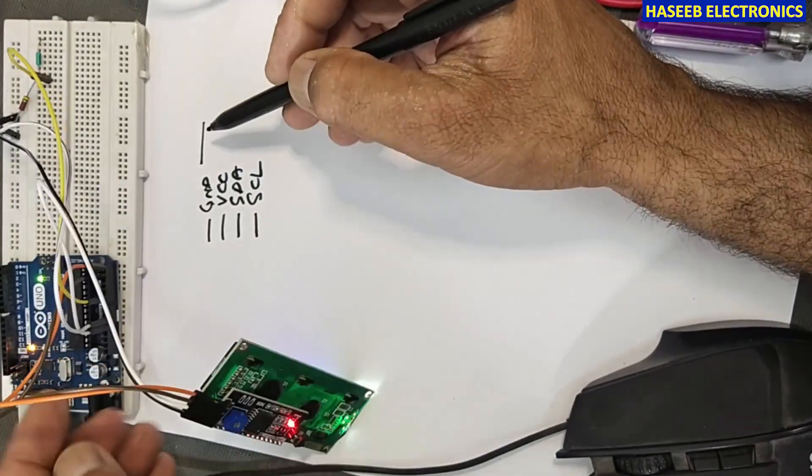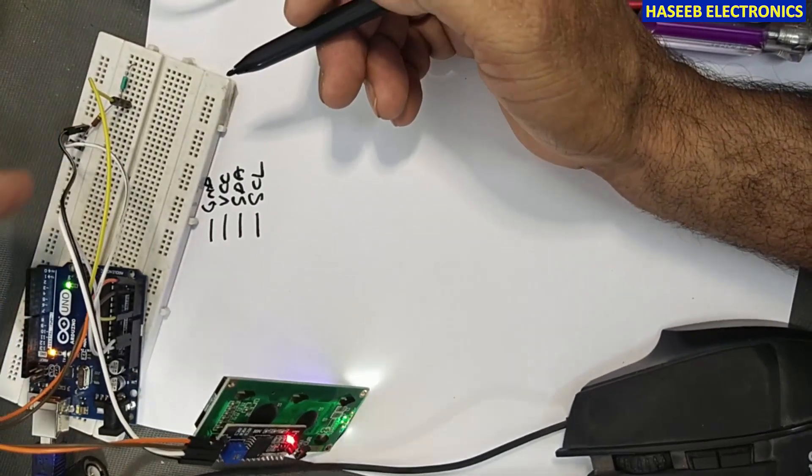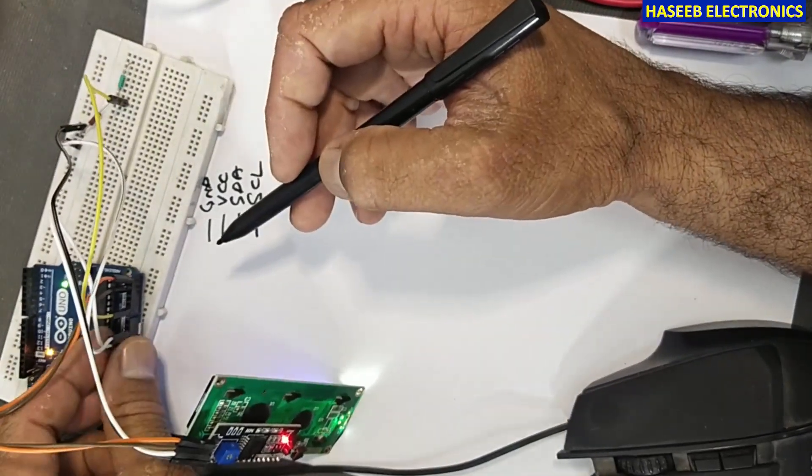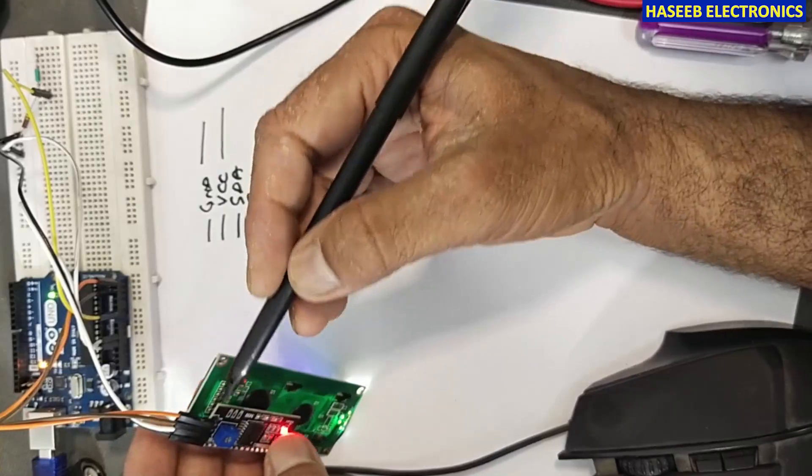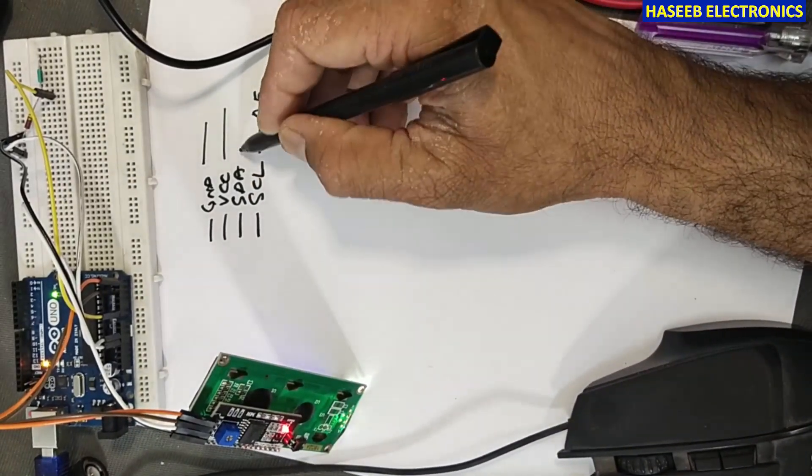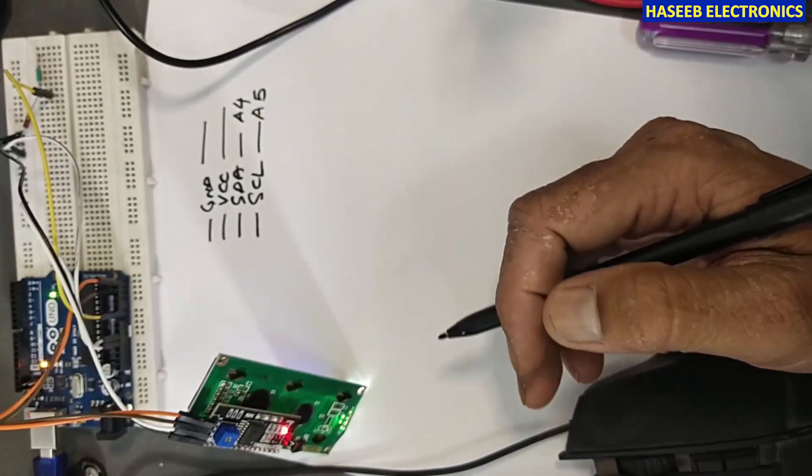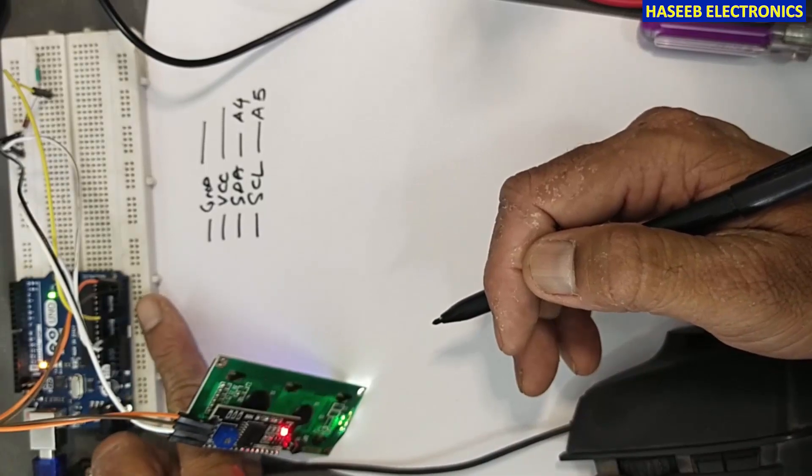This ground is going directly to the ground which I connected here. Ground and VCC we will apply from this point. SCL pin will go to A5 pin and SDA will go to A4 when you are taking measurement.